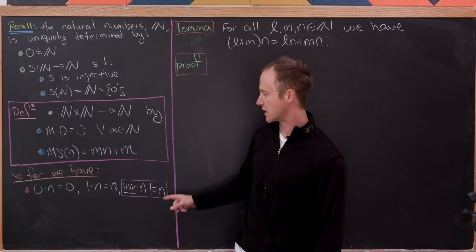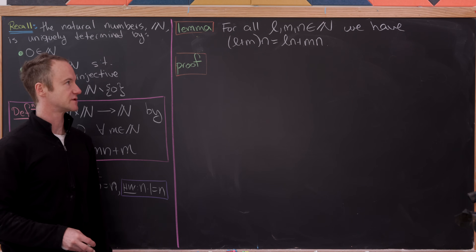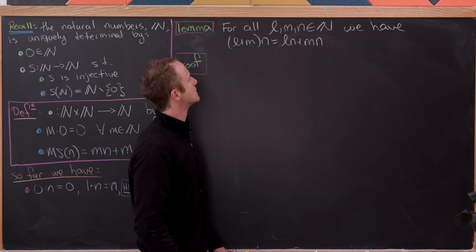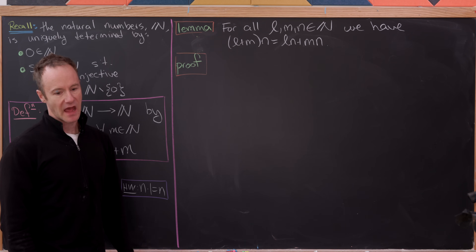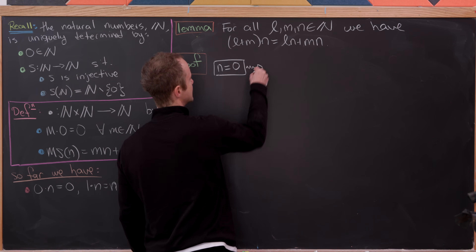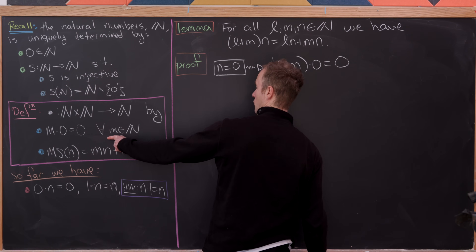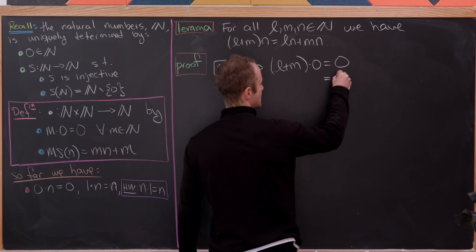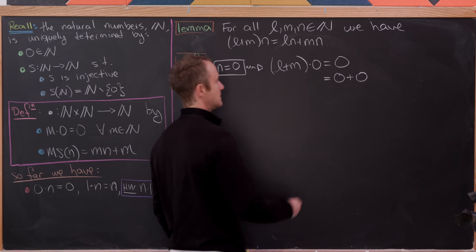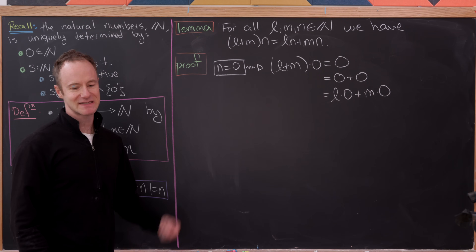I've gathered our results so far — keep those in mind. Now we're going to move on to one of the distributive rules. We'll show for all natural numbers l, m, and n that (l plus m) times n equals l·n plus m·n. We'll do this by induction on n. The base case n equals 0: (l plus m) times 0 equals 0 by our recursive setup of multiplication. But 0 equals 0 plus 0, and that equals l times 0 plus m times 0, which is exactly what we need.